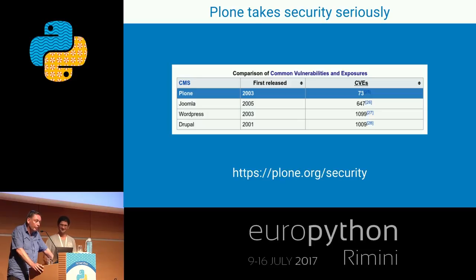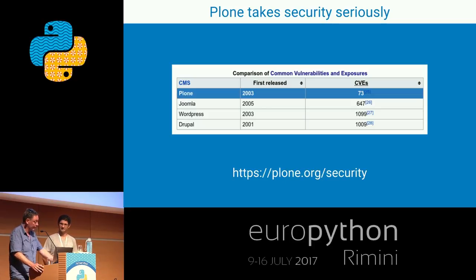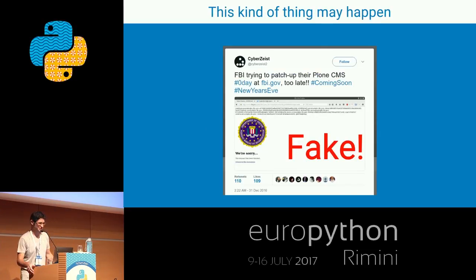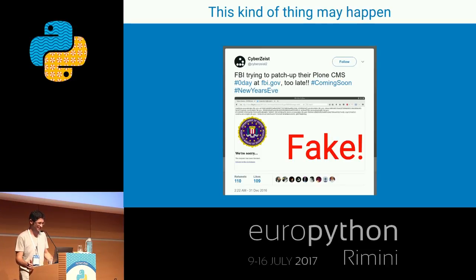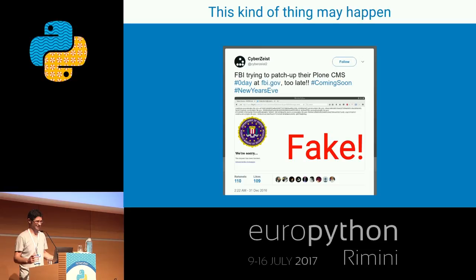What we've had most were issues with cross-site scripting, but that has been taken care of in Plone 5, even for the add-ons that you write. For example, the FBI is using a Plone solution for its website. There was fake news claiming a zero-day for FBI.gov, which was probably not true, but we were happy that the Plone name was associated with such a big security-conscious site.